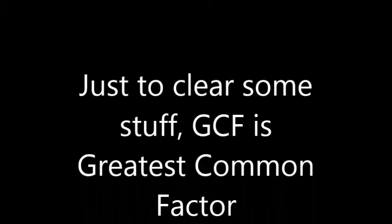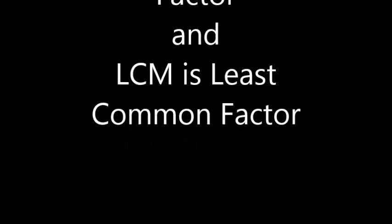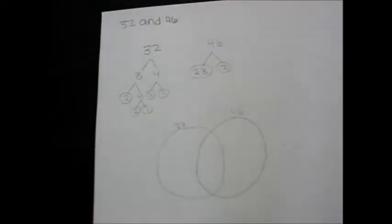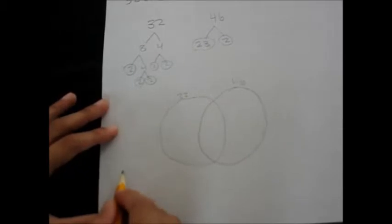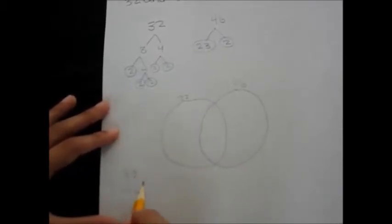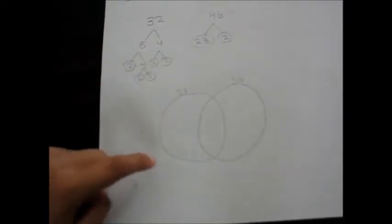Now let's make a Venn diagram. Let's label this one for 32 and this one for 46. I'm just going to zoom in. So let's make a Venn diagram, and beneath that let's write 32 right here and 46 right here.